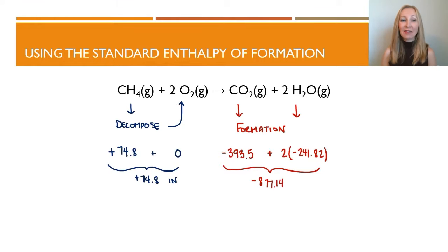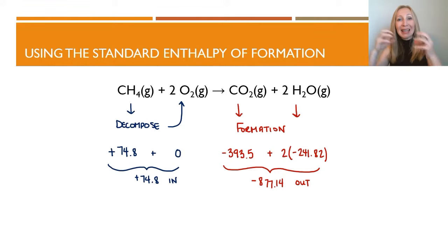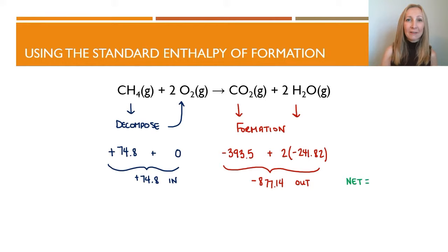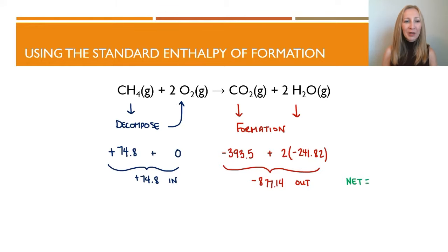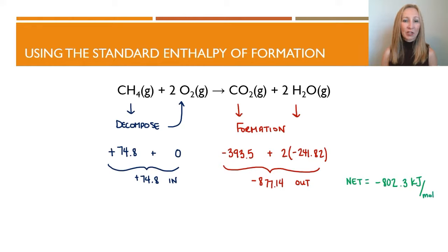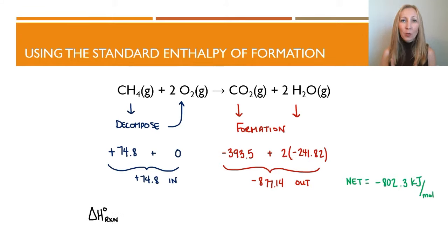This gives a negative 877.14 kilojoules — that's how much we get out. Taking apart all the reactants costs 74.8 kilojoules, but putting together the new products gives back 877.14 kilojoules. The net is negative 877.14 plus 74.8, giving a total of negative 802.3 kilojoules per mole for this reaction. That's how much we get out — we get negative 877.14 from forming the products, and had to put in 74.8 to get it started, so the net is negative 802.3 kilojoules per mole. This is an exothermic reaction.